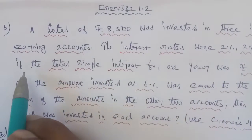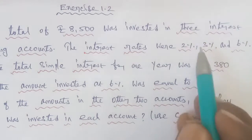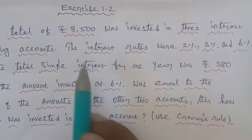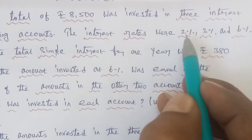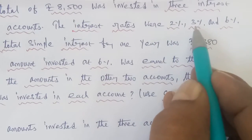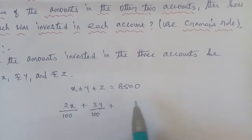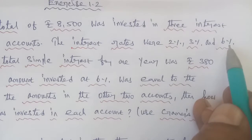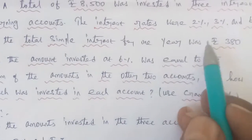The interest rates were 2%, 3%, and 6%. The total simple interest for one year was rupees 380. So for the first account at 2%, the interest is 2x/100. For the second account at 3%, it is 3y/100. For the third account at 6%, it is 6z/100. Their sum equals 380, giving us Equation 2: 2x/100 plus 3y/100 plus 6z/100 equals 380.